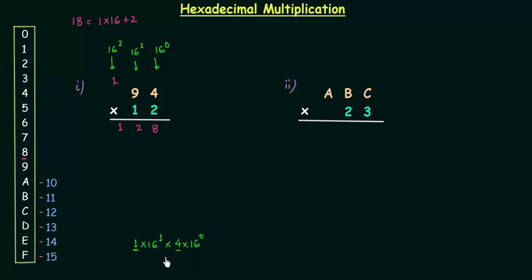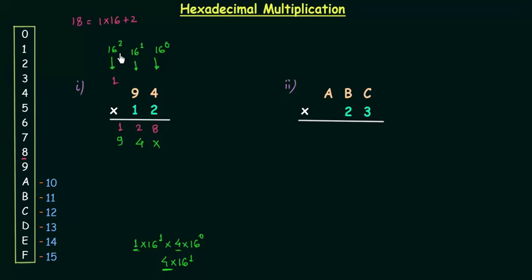1 multiplied by 4 is 4. 16 raised to power 1 multiplied by 16 raised to power 0 is 16 raised to power 1. So this 4 will go to the second column, because the second column has a weight of 16 raised to power 1, and I will put a cross mark in the first column — the column of 16 raised to power 0 — because when we multiply 94 by this 1, the minimum weight is 16 raised to power 1. None of the results will go to the first column.